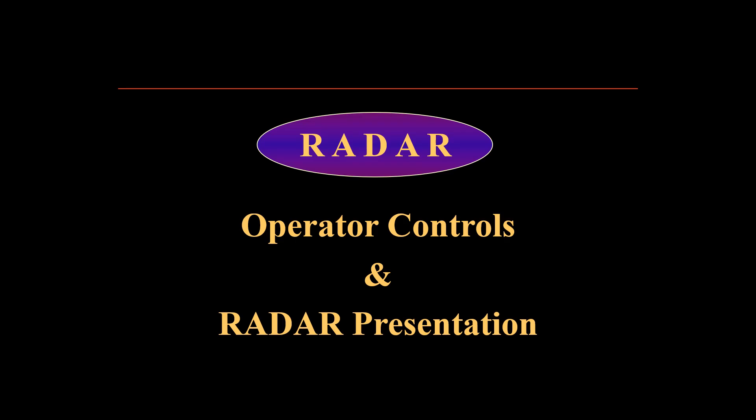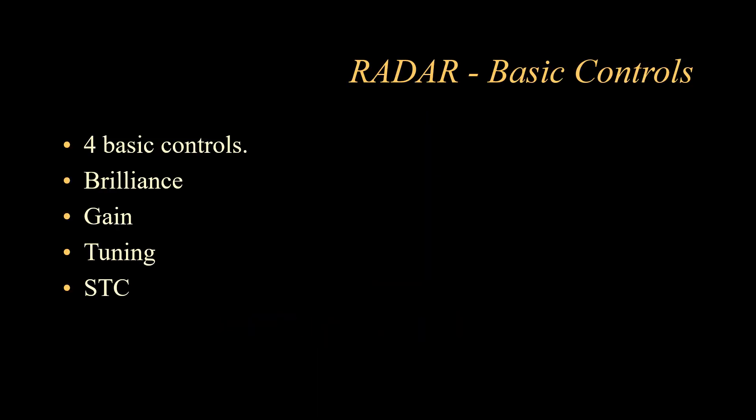Today's video is on the basic operator controls found on the marine radar used on ships, and how the use of each control influences the radar presentation as seen on the CRT or cathode ray tube. I'll be talking mainly about four basic controls: the brilliance control, the gain switch, the tuning switch, and the STC — sensitivity time control — which includes the sea clutter and rain clutter switches.